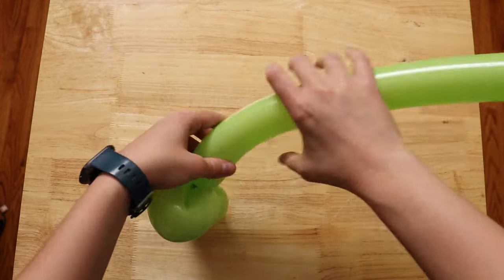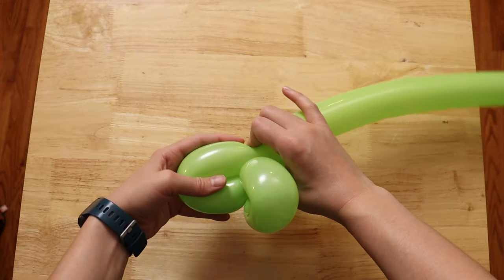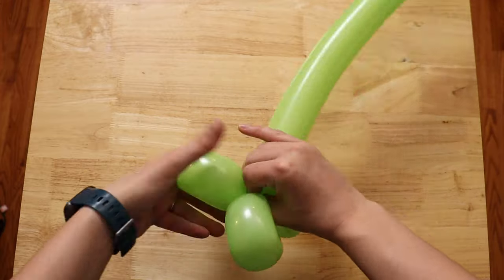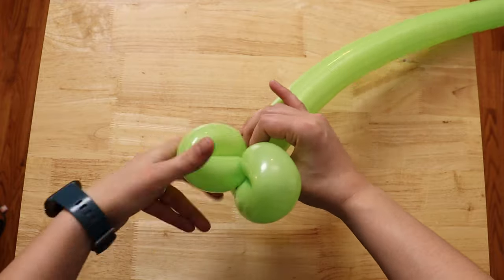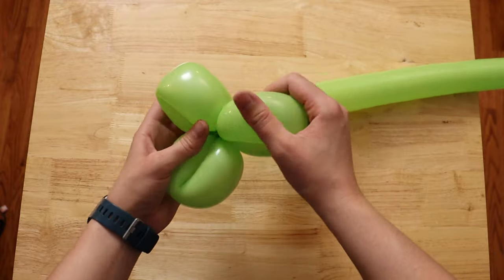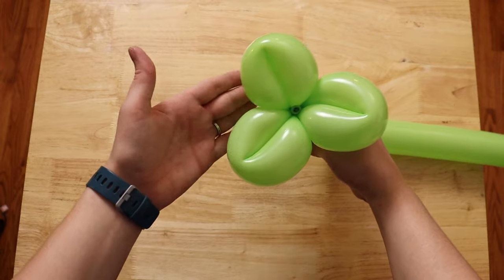Now I'm going to leave mine as a long-stemmed rose, so I won't be trimming off any of this. But if you wanted to include this into a balloon arrangement, you could always twist anywhere along the remainder of the balloon before tying off and deflating any unused portion.